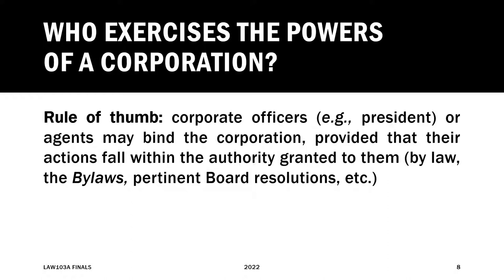Our rule of thumb is that corporate officers — for example, the president — and agents, persons acting on behalf of the corporation, may bind the corporation, provided that their actions fall within the authority granted to them. The president of a corporation has a set of powers, functions, and duties. If the president acts within the confines of his duty, his actions will bind the corporation. The same is true with agents representing the corporation with regard to certain transactions.